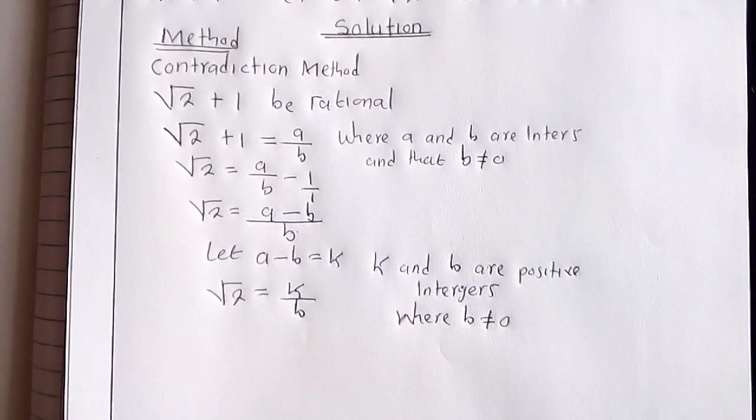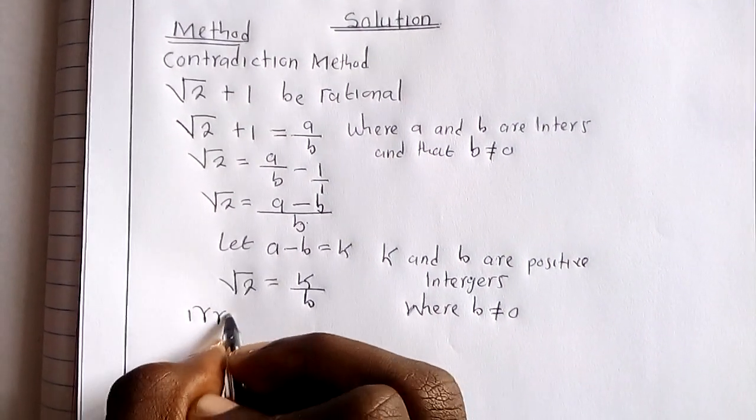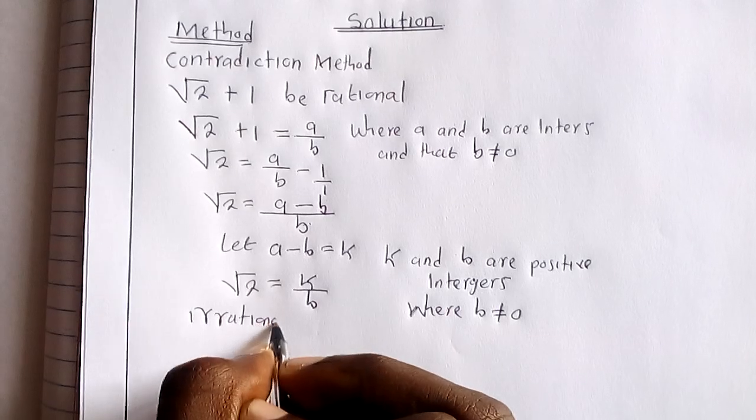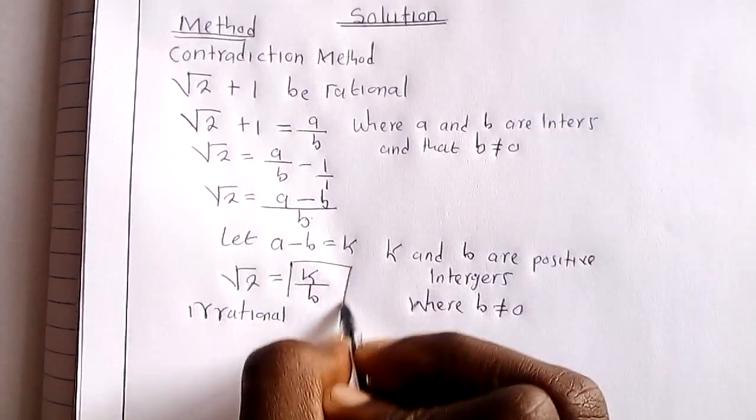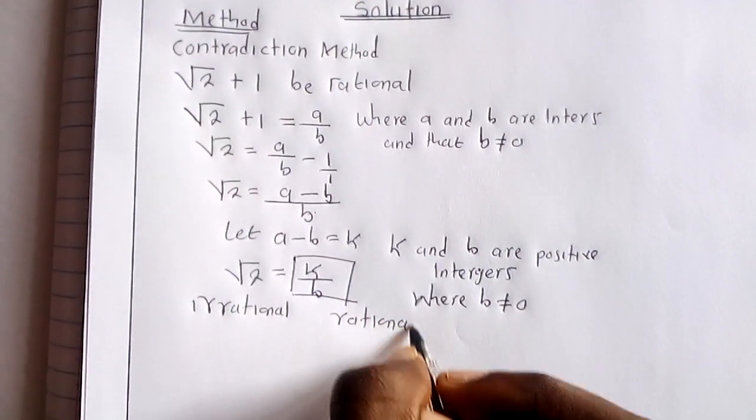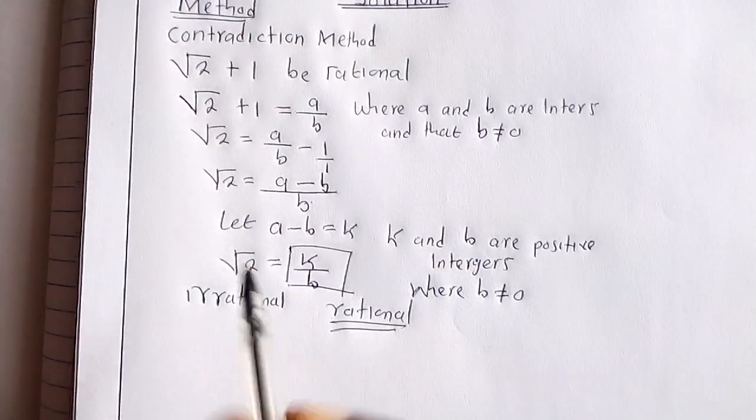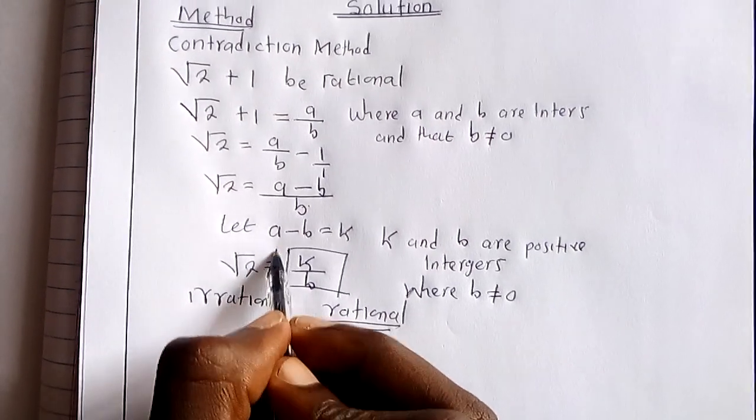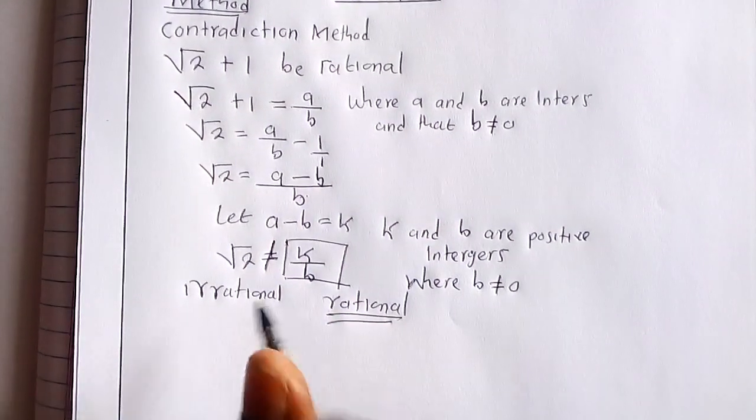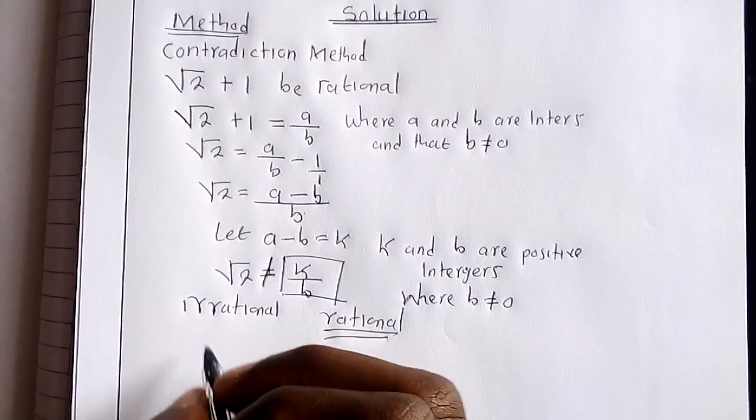But then look at this. This part is irrational. We know that square root of 2 is irrational. But this part, we have proved that it is rational, because a rational number should be expressed in this form. Therefore, this equal sign is not able to hold. So if you find something like this, then automatically you have proved...